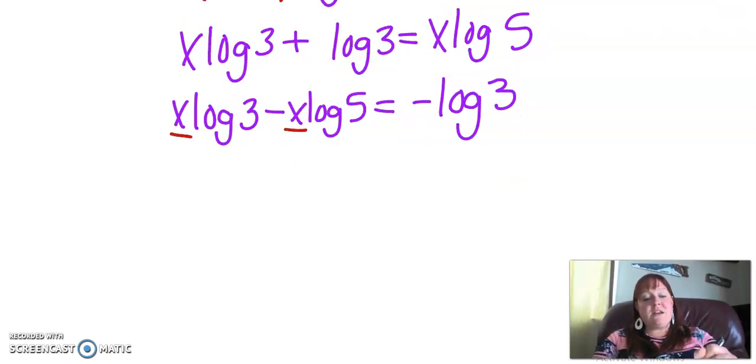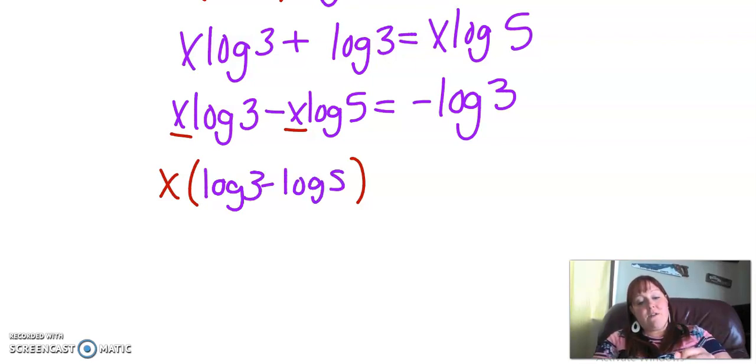Now I'm going to notice that I have an x in each of these so I can undo the distributive property. If you can imagine what happened is I had an x on the outside and I put it in, and we're going to undo that. So we're going to go back out. We're going to take the x outside of the parentheses. And what are we going to have left in here? We're going to have log three minus log five, that equals negative log three.